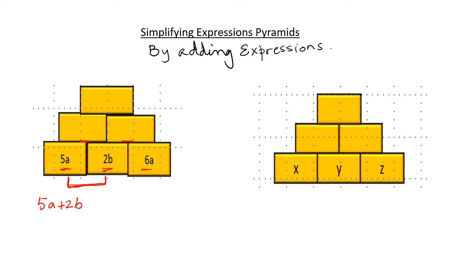When I add these two, I will not be able to simplify because I cannot add b to a. So I am going to write 5a plus 2b.